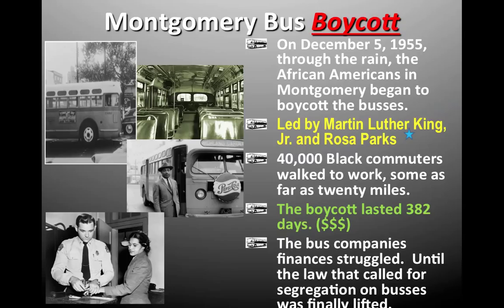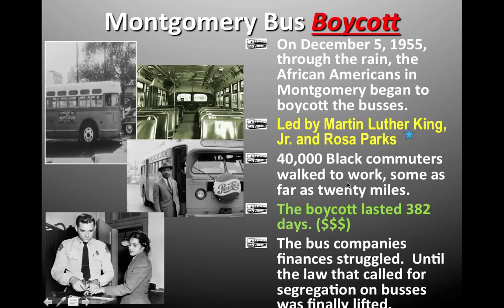Now, the Montgomery bus boycott — circle that word 'boycott.' It means to refuse to take part in something: buy it, sell it, use it. The Montgomery bus boycott is when African Americans in the city of Montgomery, Alabama refused to use the Montgomery buses. On December 5th, through the rain, African Americans began to boycott the buses. They were led by Martin Luther King Jr. and Rosa Parks. 40,000 Black commuters walked to work, some as far as 20 miles. They said: if we're paying the same fare, we should be able to sit where we want.